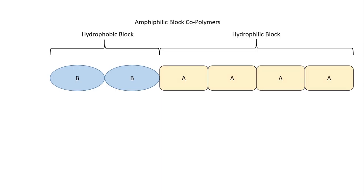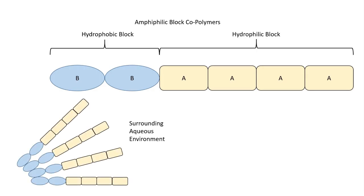Each of the blocks will retain different properties. For example, amphiphilic block copolymers have a hydrophobic block — monomers which do not interact with water — and a hydrophilic block — monomers which do interact with water. Therefore, when a sufficient number are placed in water, the polymers undergo self-assembly. The hydrophilic ends of the polymer form an outer shell around the hydrophobic ends.